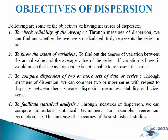The next objective is to know the extent of variation. Through the measures of dispersion, we want to find out the degree of variation between the actual value and the average value of the series. If variation is huge, it would mean that the average value is not capable of representing the series. It aims to find out the degree of uniformity or consistency in two or more sets of data. A high degree of variation would mean little uniformity or consistency, whereas a low degree would mean greater uniformity or consistency. The study of variation also helps analyze the reasons and causes of variations.